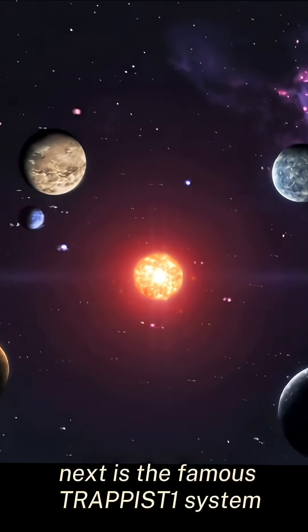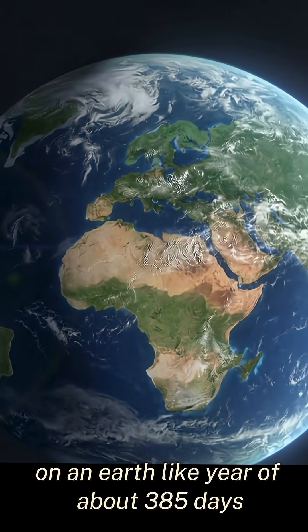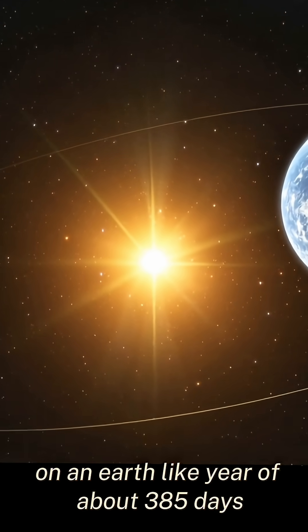Next is the famous TRAPPIST-1 system. Kepler-452b is an Earth-sized world on an Earth-like year of about 385 days.